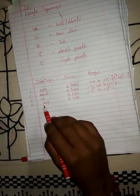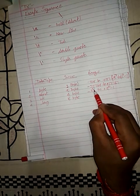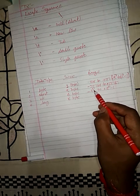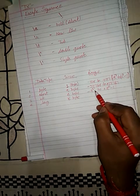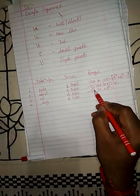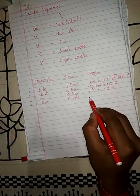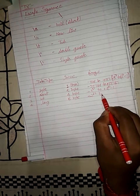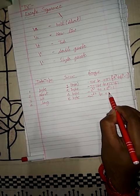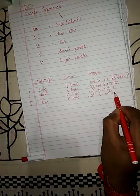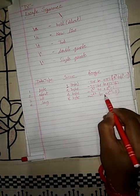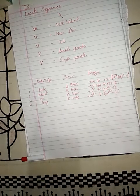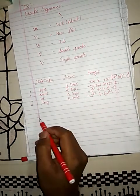For the next integer type, long: take 31, multiply by 2 to get 62, plus 1 equals 63. So the range of long is minus 2 to the power 63 to 2 to the power 63 minus 1. This completes the integer family.